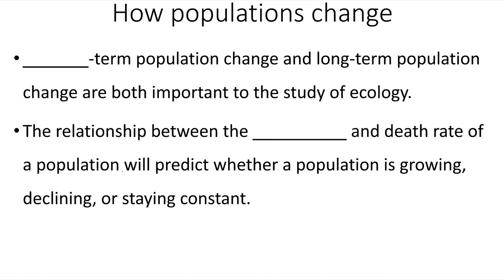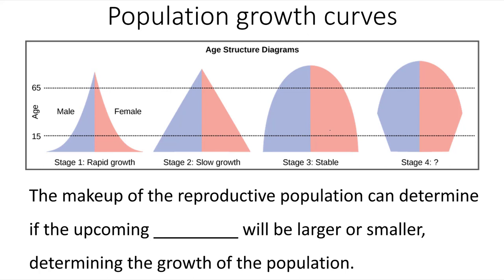Figuring out how populations change is one of the goals of an ecologist. Both short-term and long-term population change are important to the study of ecology. The relationship between birth rate and death rate will predict whether a population is growing, declining, or staying the same. The proportion of individuals in the reproductive population also indicates whether upcoming generations will be larger or smaller, determining the growth of that population.